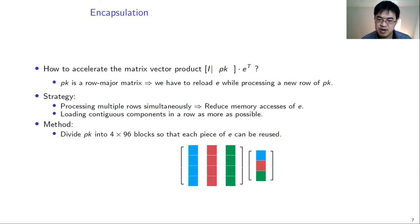We divide the public matrix into 4 by 96 blocks. In each block, the vector e is used only once.